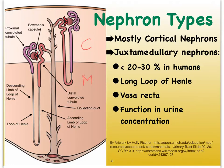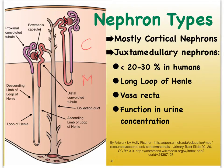In contrast, our so-called juxtamedullary nephrons, meaning sitting at the junction with the medulla — those juxtamedullary nephrons have an extremely long loop of Henle that dips far, far into our medulla, and there is a reason for that. These juxtamedullary nephrons, which make up about a fifth or so of all the nephrons in a kidney, are responsible for helping us really concentrate our urine. We'll talk more about that down the road.